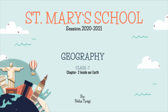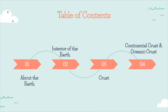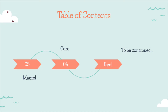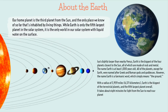Hello students, welcome to another virtual session for Geography Class 7. Today we are going to discuss Chapter 2: Inside Our Earth. It is quite an interesting topic. The topics we are going to cover today are: about the earth, interior of the earth, crust, continental crust versus oceanic crust, mantle, and core. The remaining topics will be covered in the next session.